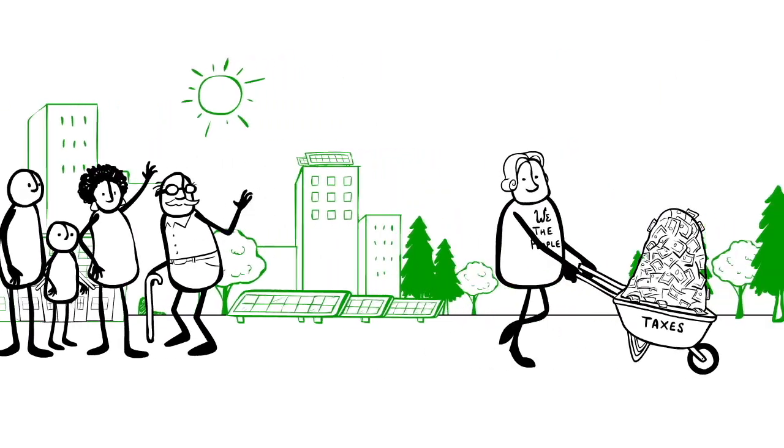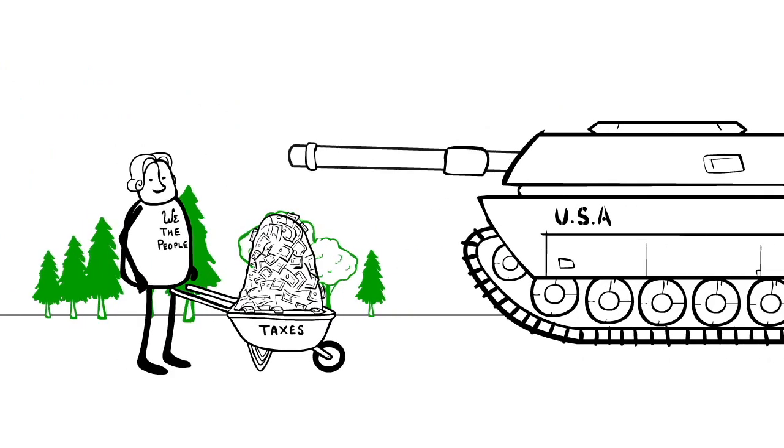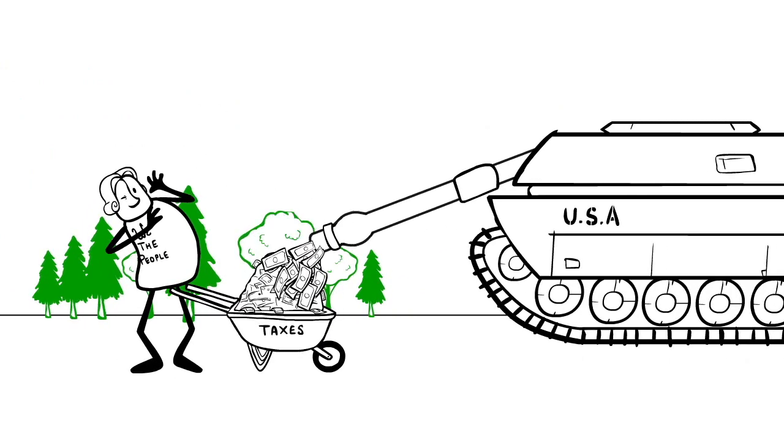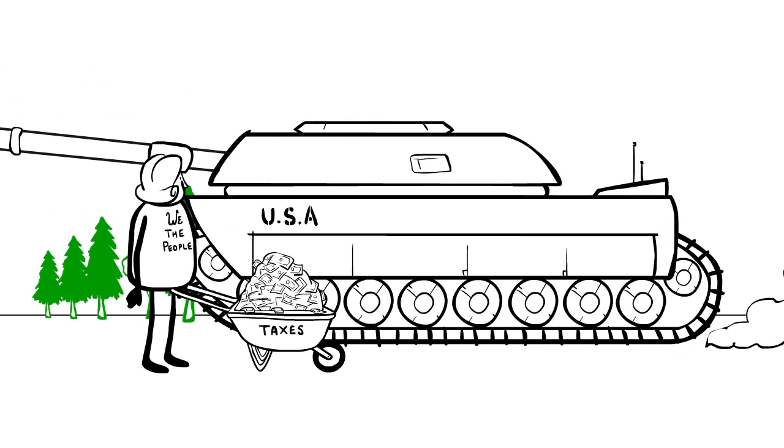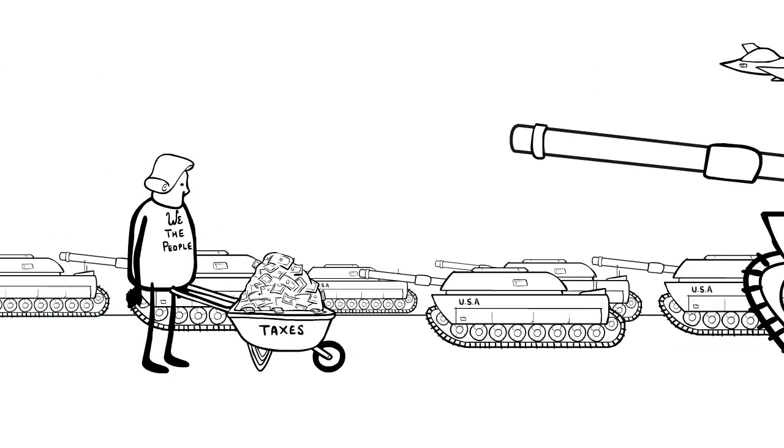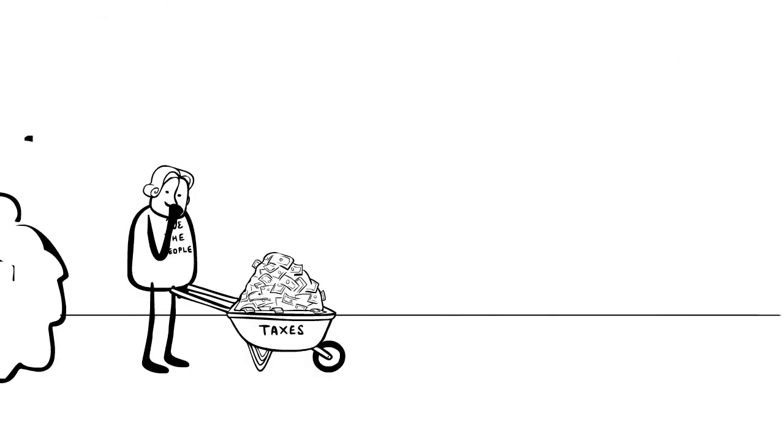So where is all that money going? Well, first, the military takes the biggest chunk, $726 billion in 2011. Wow. We could build a lot of better future with that kind of money. Spending billions on fighter planes that we don't need, or wars with no end, and then saying we're broke just isn't honest.